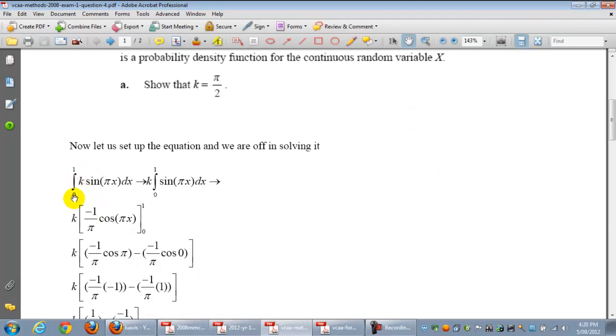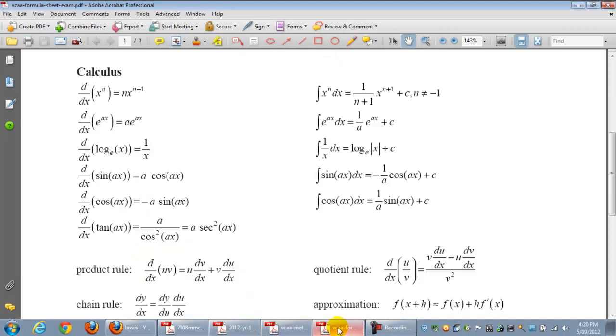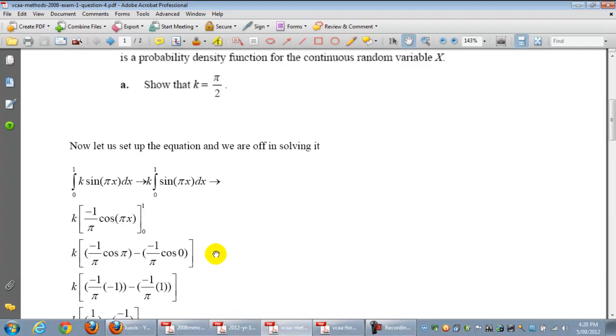And so we use this fact. We can take out the k because it's constant. So we want to find the antiderivative there. And there it is, minus 1 on pi cos pi x from 0 to 1. So you would have got that from right there, as you can see there. So that's the one you would have got. All right, so we'll return back.